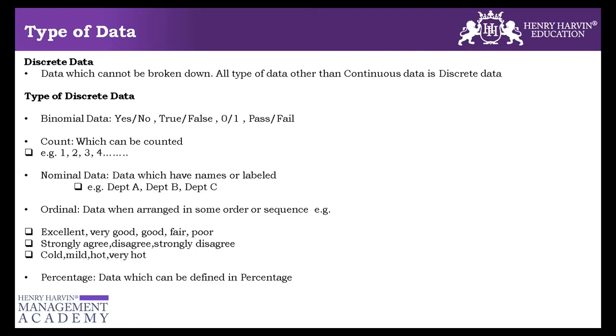And last but not least, which is part of discrete data is a percentage, like 55%, 65%, 65.3%. So if you notice, whether it's binomial, whether it's count, whether it's nominal, whether it's ordinal, whether it's percentage, all these cannot be broken further. This is the last sort of unit that you have. You will not be able to convert. You cannot be breaking the binomial data because you will have either true or false. You cannot break number of count. You cannot say half people or one-fourth people. Similarly, nominal, you cannot break and percentage also you cannot break.